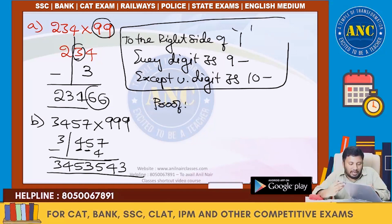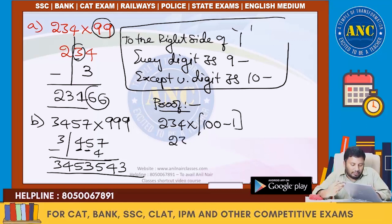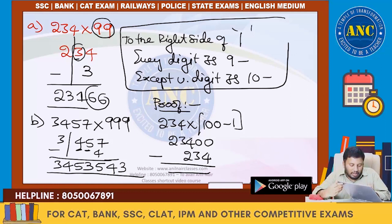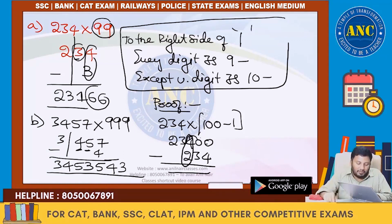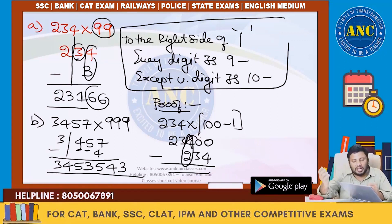Why is it happening like this? 234 into 99 is 234 into (100 minus 1), which is 23400 minus 234. See here, 0 will not go, so carry. T is becoming 3 minus 2, or equivalently 4 minus 3 — both are the same. We are adding 1 because we are taking carry 1, so 4 is becoming 3. 4 decrease 1, or increase 1 to 2 — both are the same.